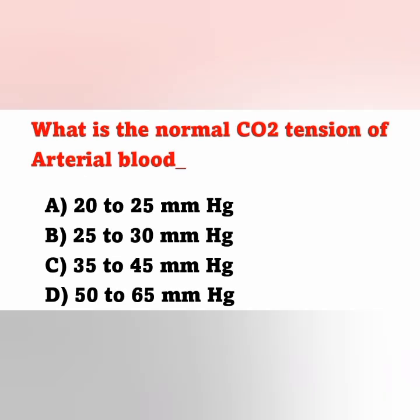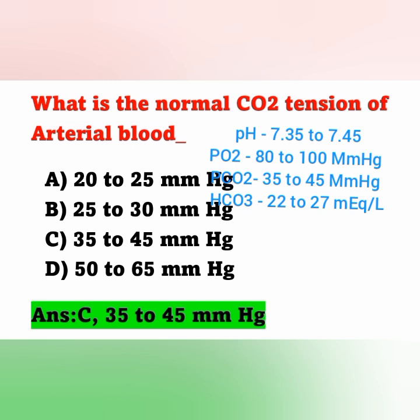The next question: What is the normal carbon dioxide tension of arterial blood? Option A: 20 to 25 mmHg; Option B: 25 to 30 mmHg; Option C: 35 to 40 mmHg; Option D: 50 to 65 mmHg. It is 35 to 45 mmHg — Option C is the correct answer. Normal arterial blood gas values: pH 7.35–7.45, partial pressure of oxygen 80–100 mmHg, partial pressure of carbon dioxide 35–45 mmHg, and bicarbonate 22–27 mEq/L.